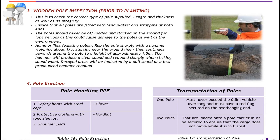Hammer test for existing poles. Wrap the pole sharply with a hammer weighing about 1 kg, starting near the ground line then continuing around the pole to a height of approximately 1.5 m. The hammer will produce a clear sound and rebound sharply when striking sound wood. Decay areas will be indicated by a dull sound or a less pronounced hammer rebound.